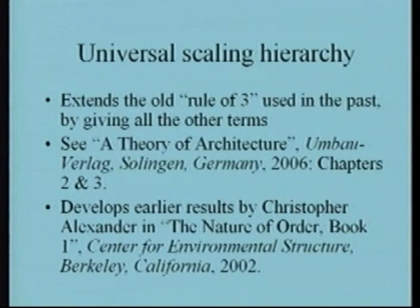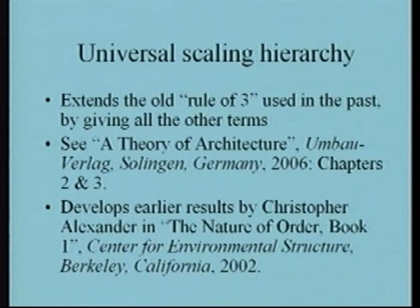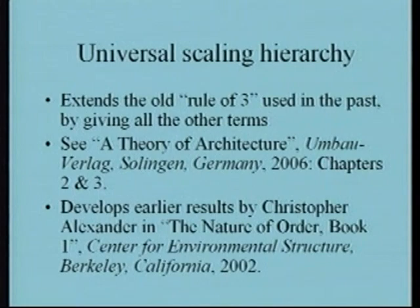The universal scaling hierarchy extends the old rule of three used in the past. In many architectural rules of thumb, the master architect would say: if you want something on a bigger scale, multiply it by three; if you want to subdivide it, divide it by three. What we have done is give the other terms. There is a certain pleasure in mathematics when you take a result that has been around for millennia and say: this is incomplete — there are more terms than the number three, and the other terms are the ones I have given you. So there's an intellectual satisfaction here.